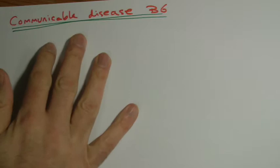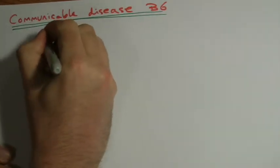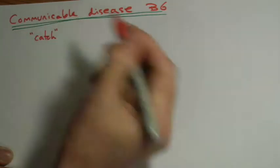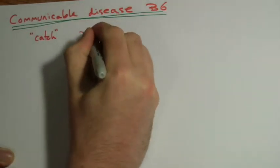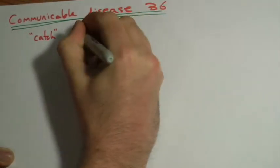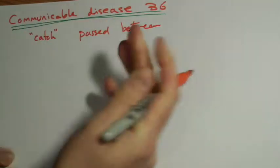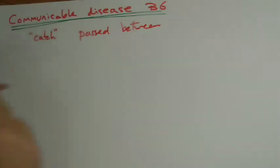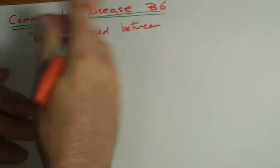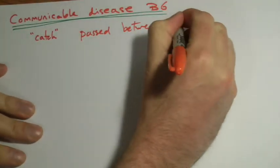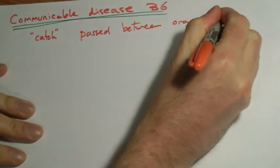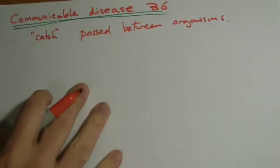The B6 is about communicable diseases, which really just means something that you can catch, is a simple way to put it, or it can be passed between organisms is maybe a better way. So this is usually when we think of disease, what we tend to think of - something that you catch from somebody. But not all diseases are communicable. Genetic diseases, for example, you can't catch, you were born with them.